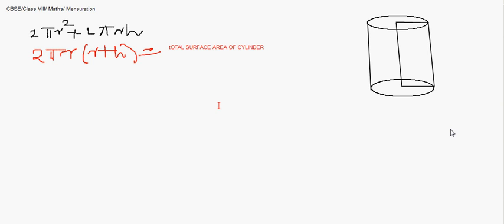Now coming to the volume — one thing I missed: if it is a hollow cylinder, what will happen? I'll use the same figure to draw a hollow cylinder, adding another set of internal dimensions to represent the thickness.